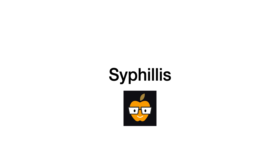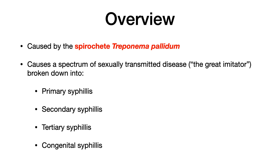In this video we will talk about syphilis. Here is a brief overview. Syphilis is caused by the spirochete called Treponema pallidum. Syphilis causes a spectrum of sexually transmitted disease and because of its very wide-ranging clinical syndromes, it has been referred to as the great imitator.